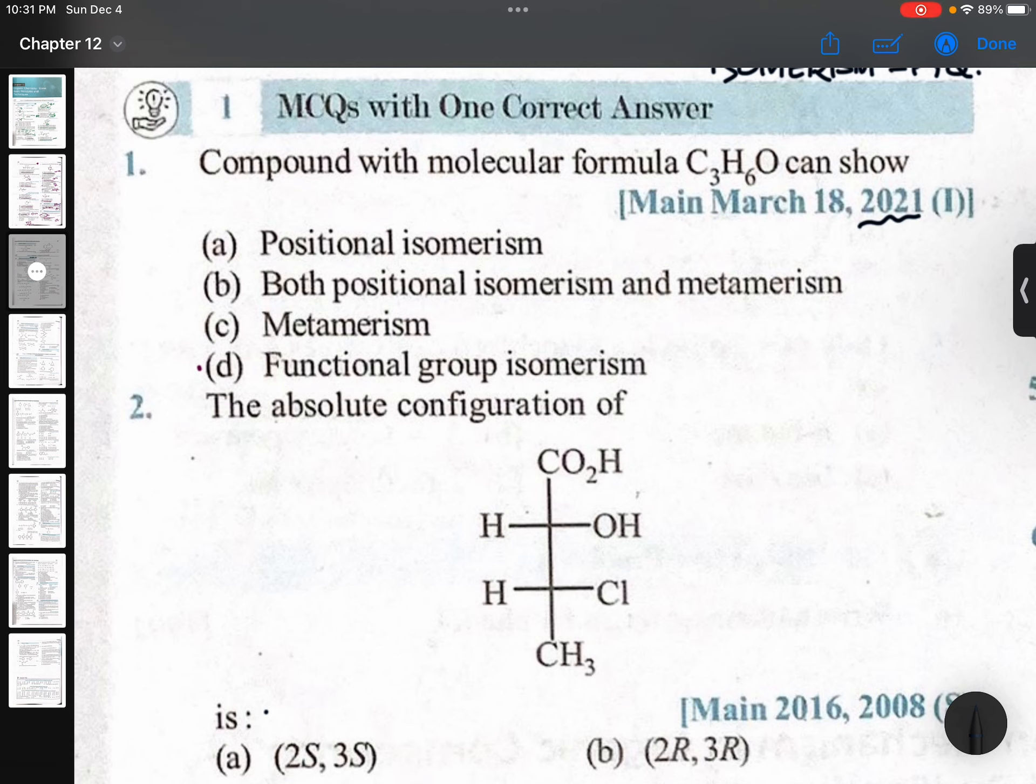Compound with molecular formula C3H6O can show CH3-CH2-C double bond O (aldehyde) or CH3-C double bond O-CH3 (ketone), so functional group isomerism is right. They cannot show metamerism. Positional isomerism is not possible. Easy question.